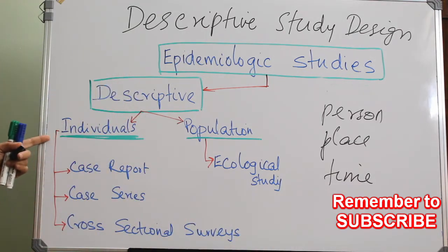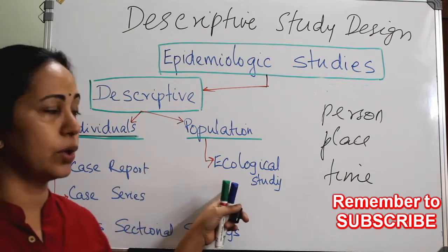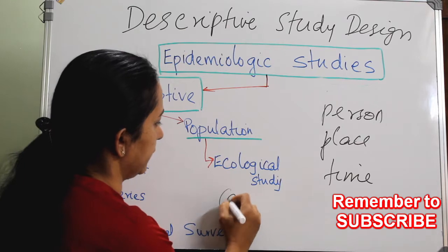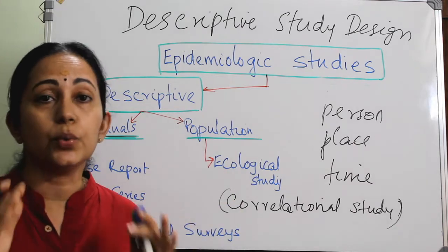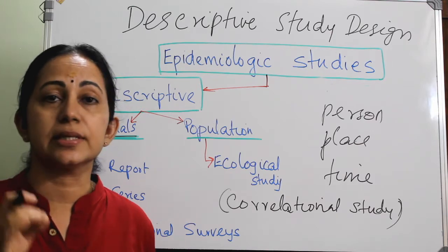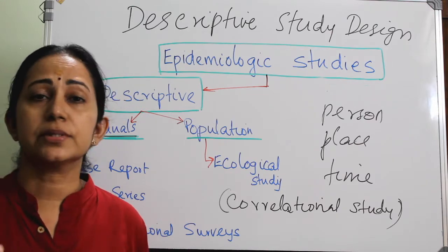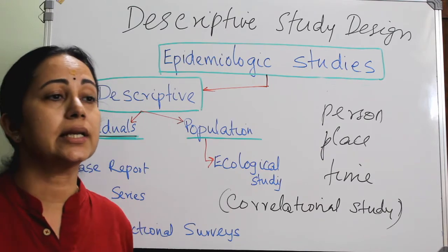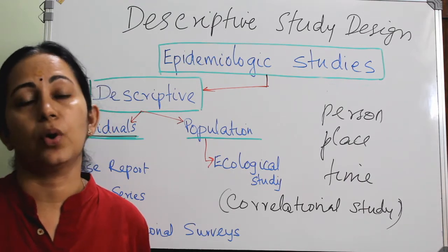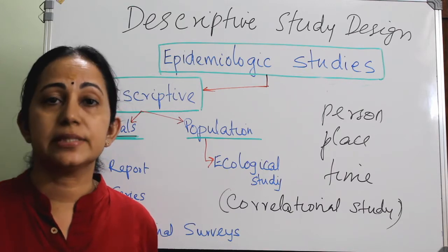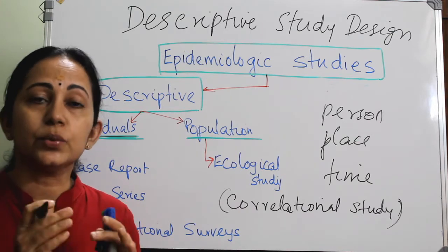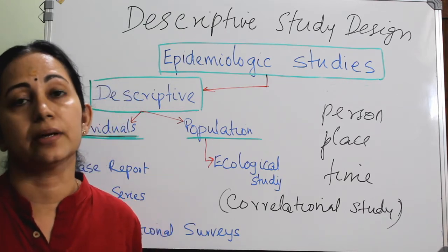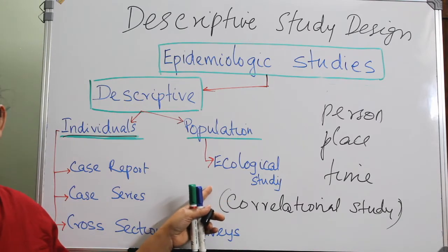These are the types of descriptive study design — individual-based and population-based. The population-based study is called the ecological study, otherwise called a correlational study. This ecological study is mainly based on a group; the unit of analysis is a group, not an individual. For example, a study conducted in the United States found a relation between household firearm ownership and firearm death rate in various states during 2007 to 2011. The unit of analysis here is various states of the USA, not the individual — such studies are called ecological studies.